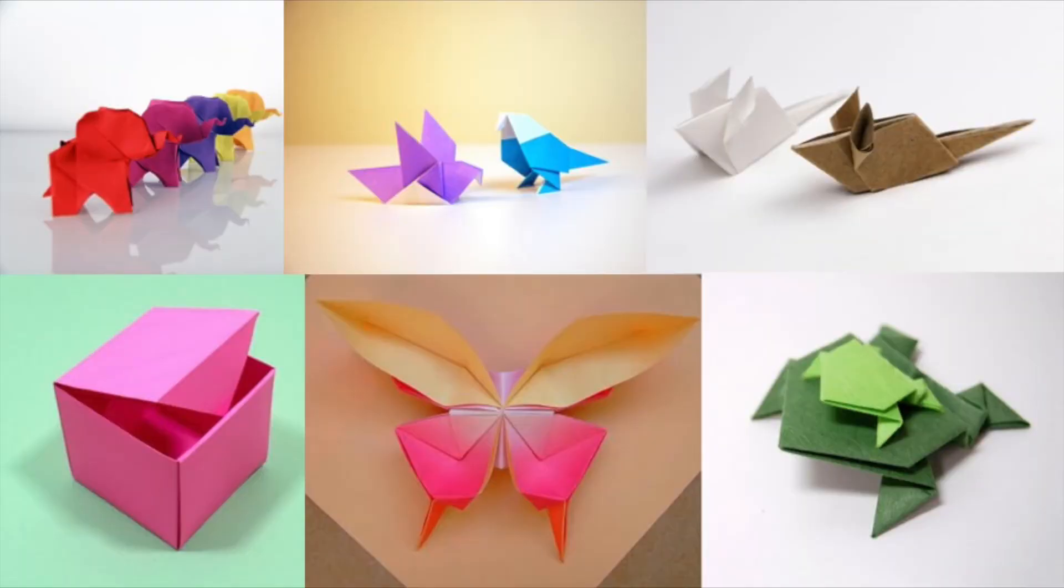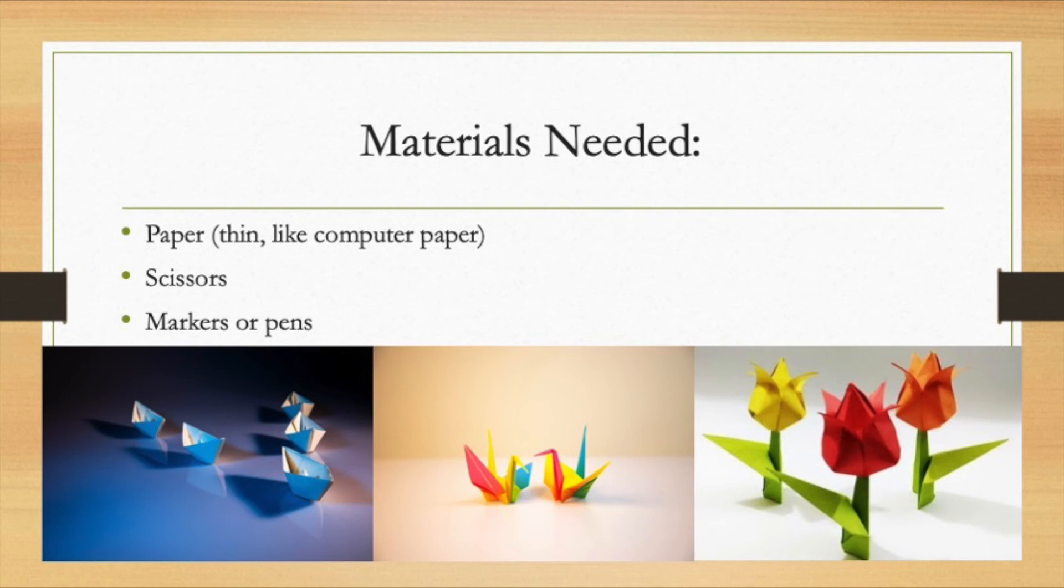There are so many different things that you can make with origami. Here you can see there's an origami elephant and a bird and a mouse and a box. That's a butterfly and even a frog. Today we're going to be making an origami crane, a tulip and a boat. So what are the materials that you'll need for this? It's very simple today. You will just need some paper, preferably thinner paper and you'll need scissors but not to cut the origami. Cut your paper into a square. If you want to color your origami, you can grab some markers or some pens as well. So let's get started making some origami.